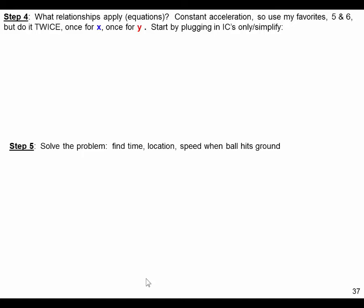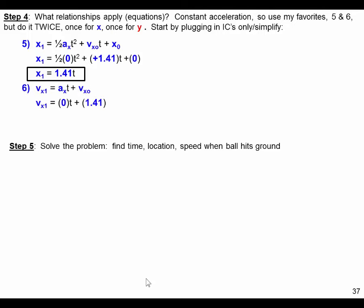But instead of using one set of equations, we'll do it twice. Once for the x-direction, once for the y. So, we're going to write down our equations. We'll plug in our initial conditions only to start with and simplify a little bit, and there's my x, my position as a function of time in the x-direction. Same thing for the velocity in the x-direction. Plug in our initial conditions.